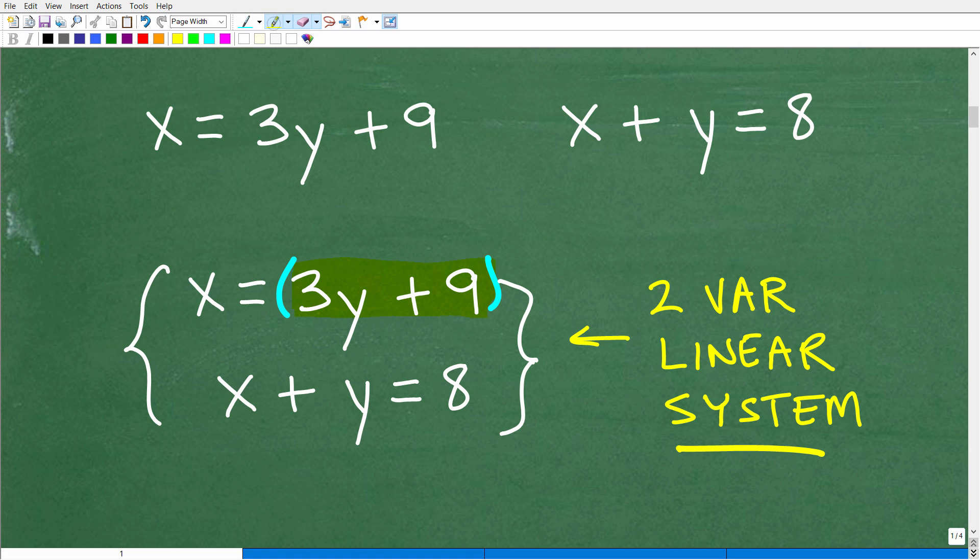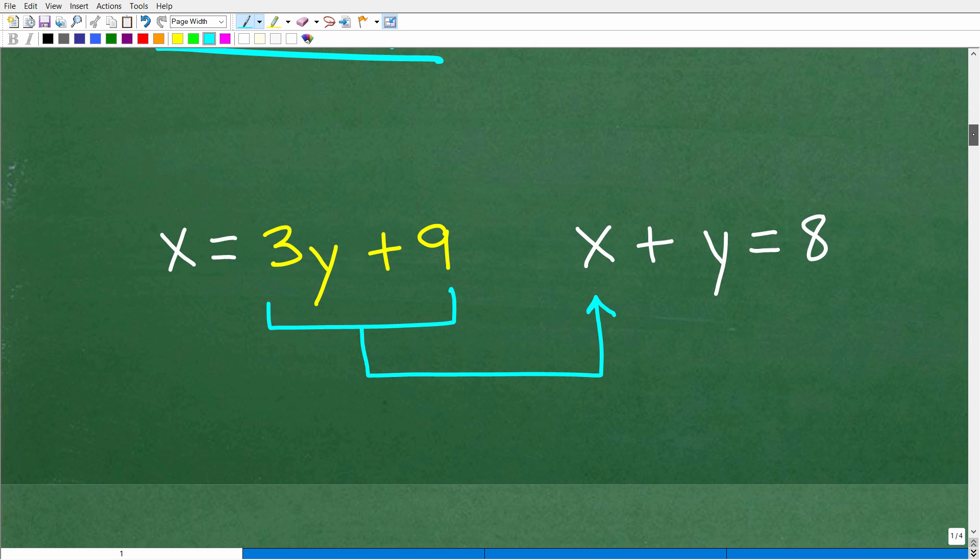All right. So before we take the next step here, we have X equal to 3Y plus 9. Well, if X is all this stuff, I could replace this X right here with all this stuff. And now I have one equation with just Y's in it. OK, and that's what we want to do is create one equation with one variable. So let's go ahead and take the next step.